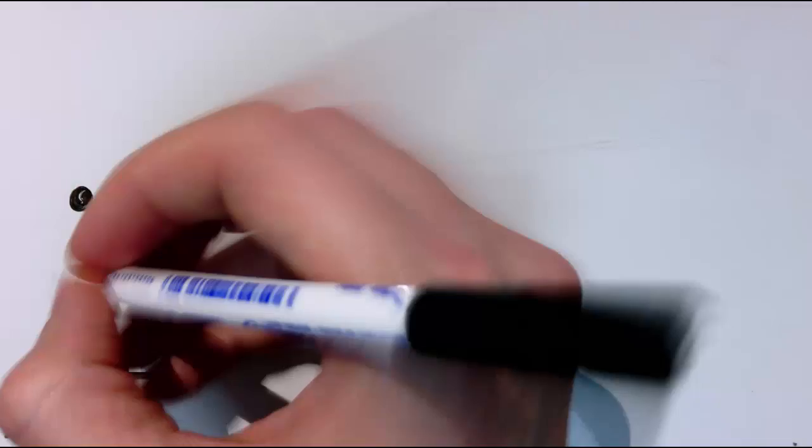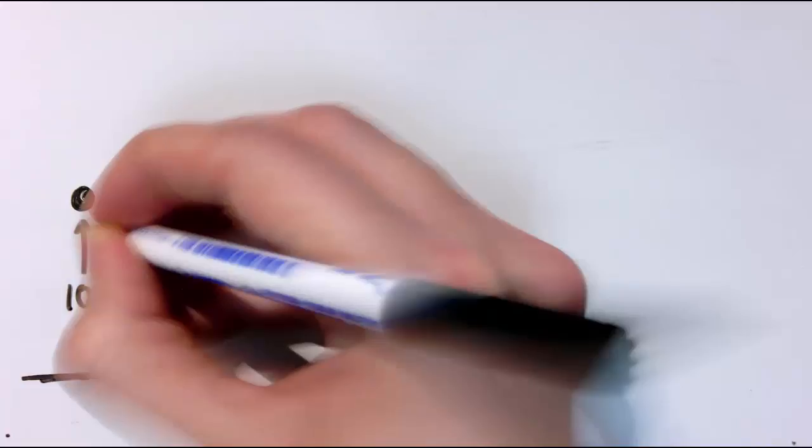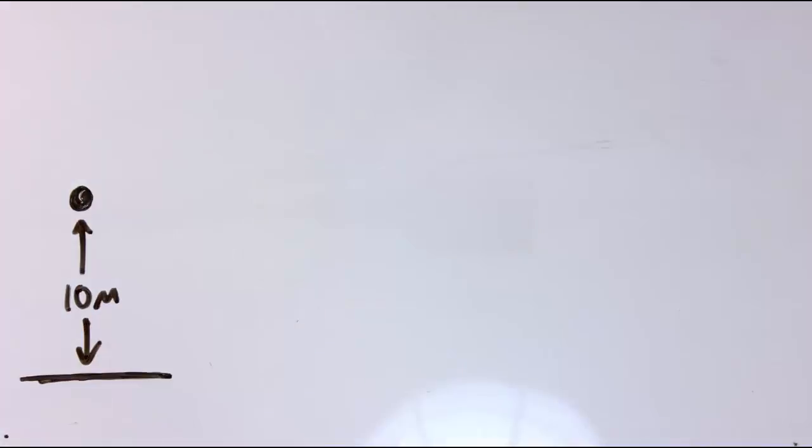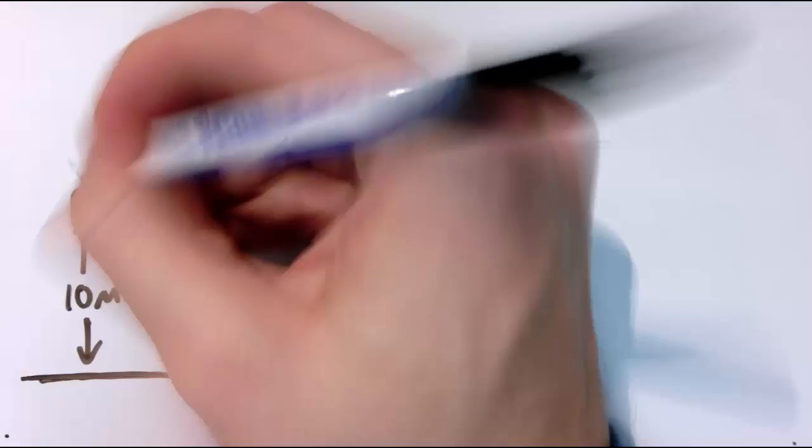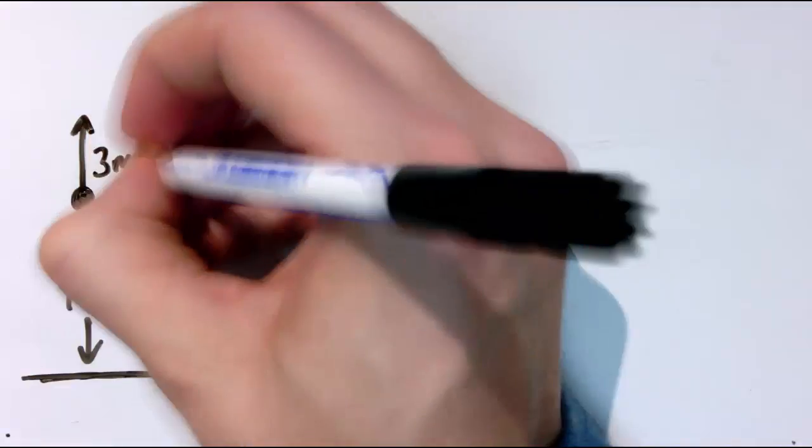So I've got the ground level here, I've got some object that I'm modelling as a particle. Let's say it's 10 metres above the ground, and perhaps it might just start from rest and free fall, or perhaps I might even start it with a velocity upwards of, let's say, 3 metres per second.